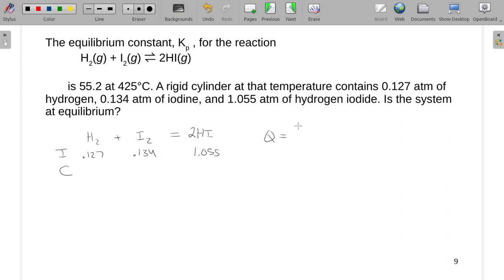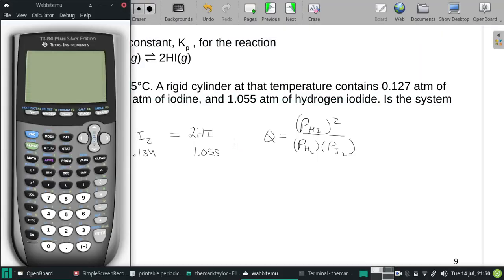We have Q in terms of pressure. This is the partial pressure of HI, the only product, all over the partial pressure of H2 and the partial pressure of I2. Those won't have any multiplications to one another, so we're just going to be putting those numbers into our calculator.